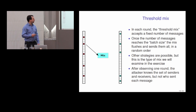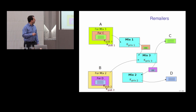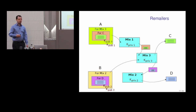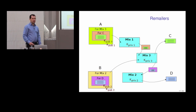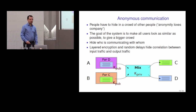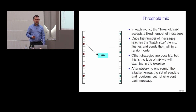However, there is a problem with this sort of system. If you see a message coming in and then a message going out, then another message coming in and another going out — someone observing this knows with certainty which input corresponds to which output based on timing correlation. They can't see the content, but they know who's communicating with whom. This problem exists across the entire chain. So what we have to do is hide timing patterns. A simple way to do this is called the threshold mix — the mix receives a number of messages and when it hits a particular batch size, it sends out all the messages in a random order.